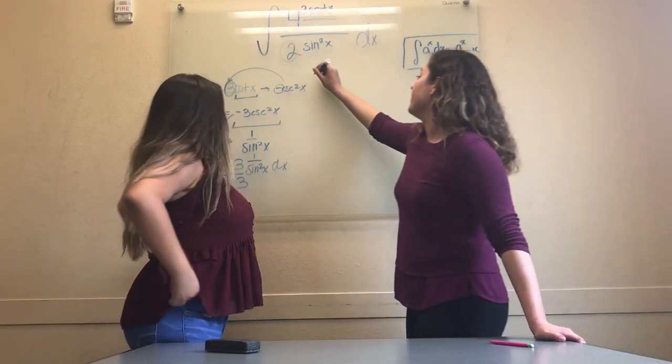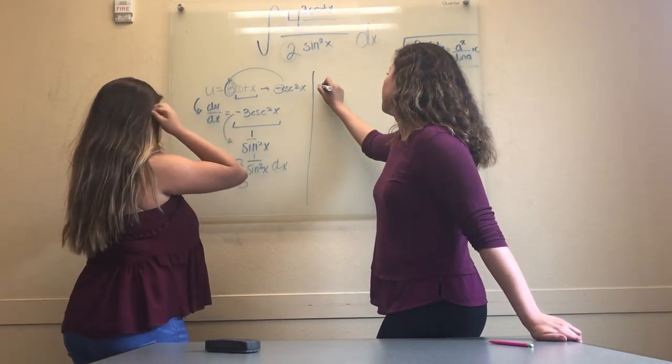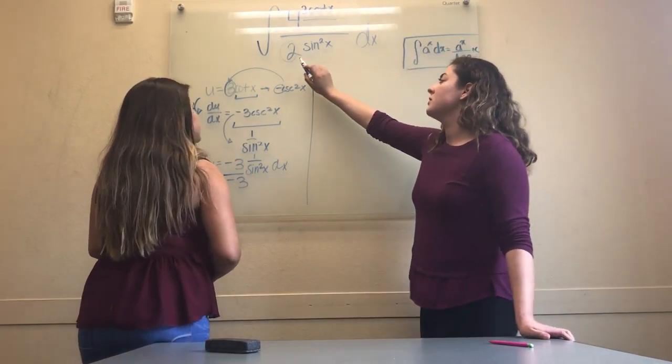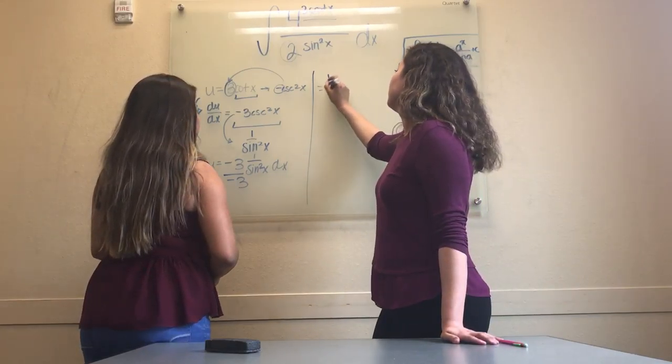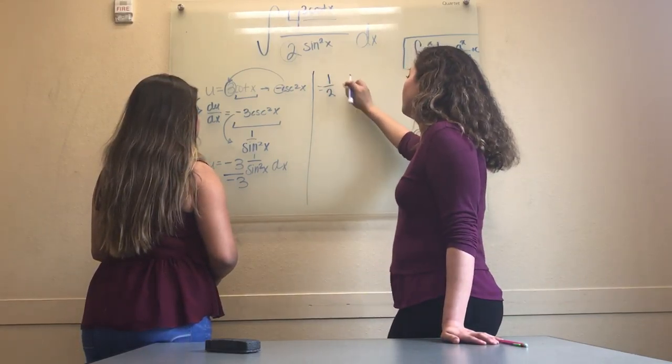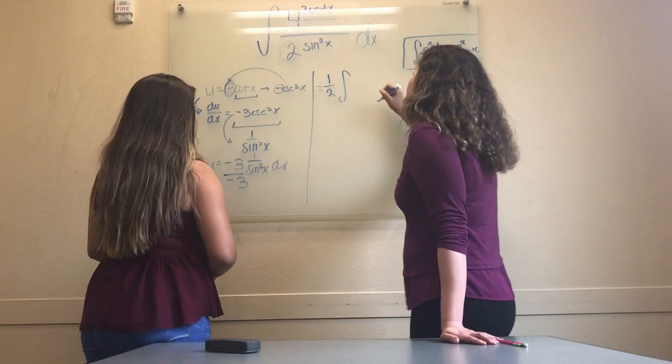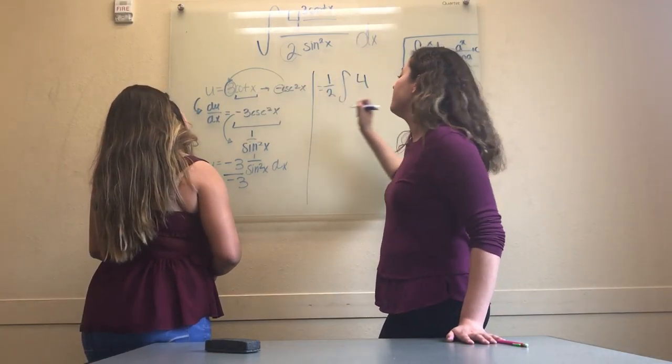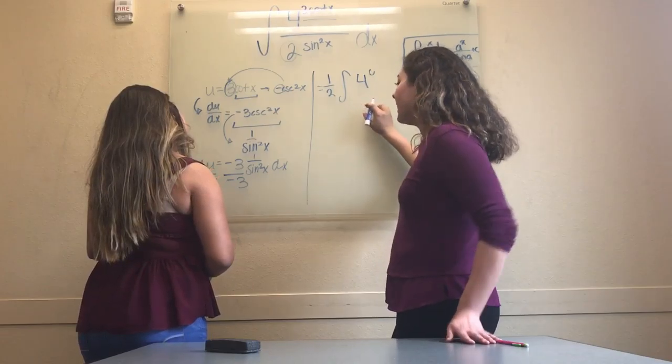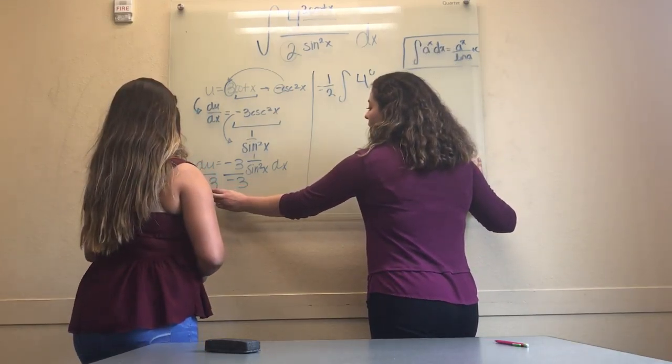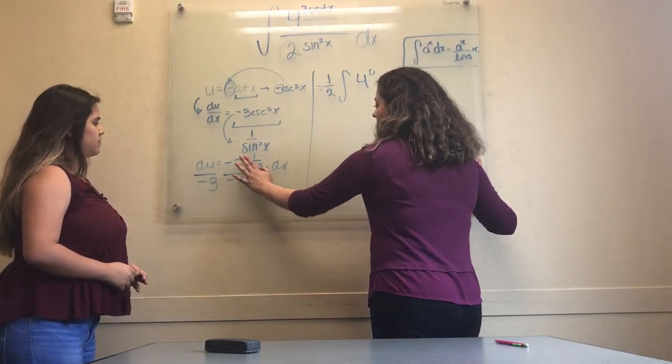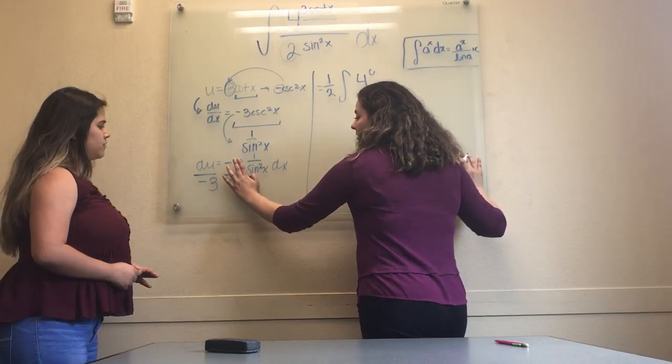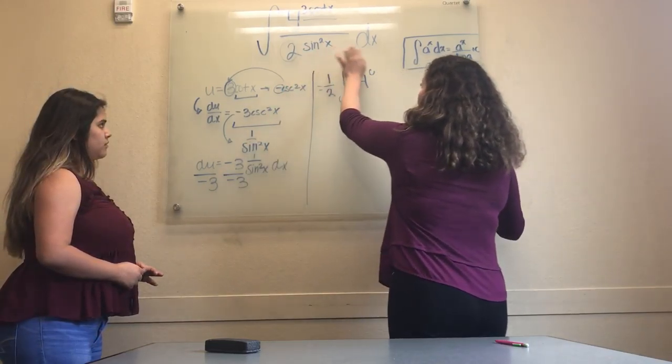Now we're going to compare. Because we have a constant of 2, we can take that out, and we have 1 half times the antiderivative. Then we can plug the 4 and put u times du over negative 3, which equals 1 over sin squared x dx, which is what we have here.